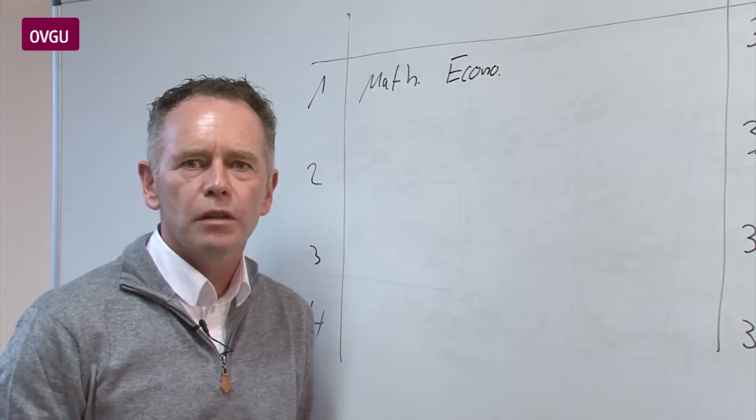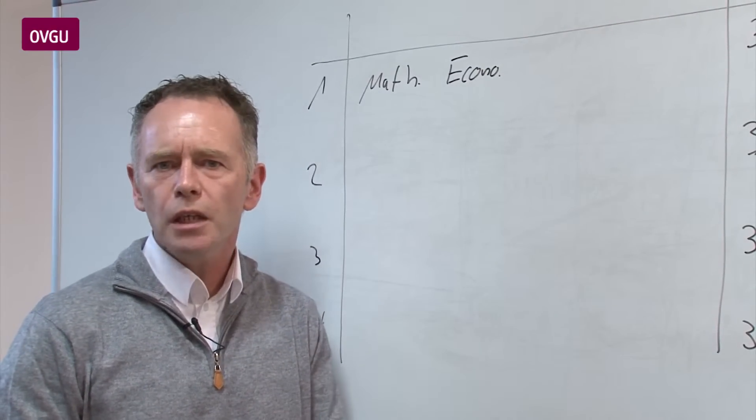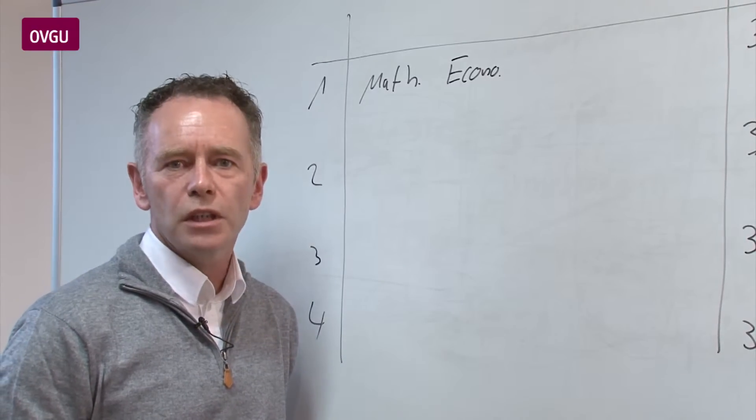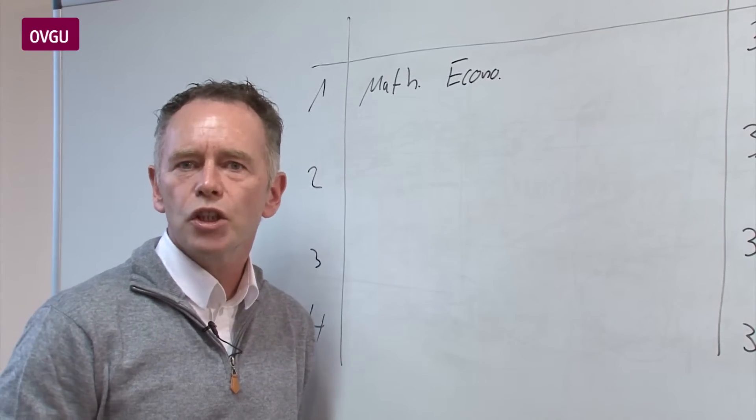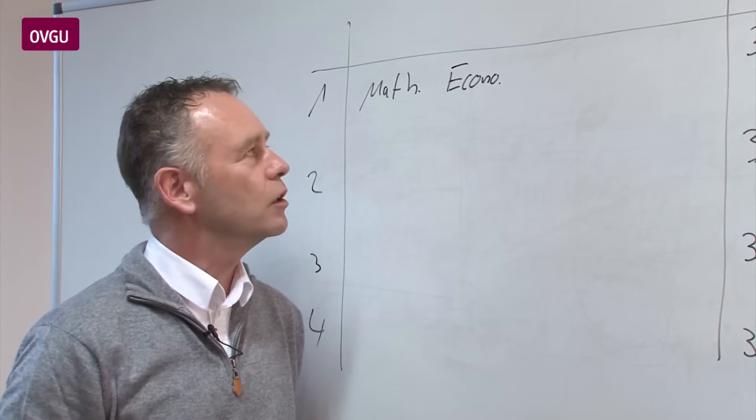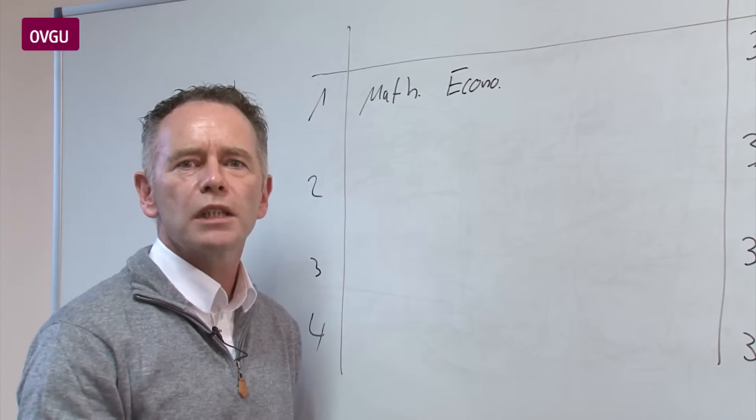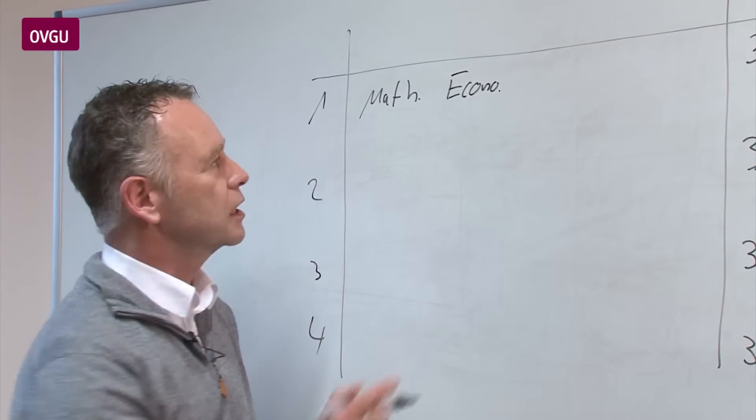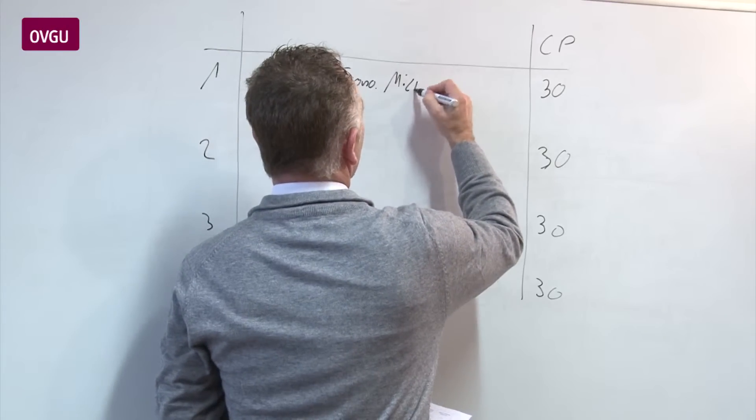Econometrics is very, very important because in both, in management and in economics, we use econometrics methods to find some relationships, to get results, to see what is happening in practice, what are the empirical results.